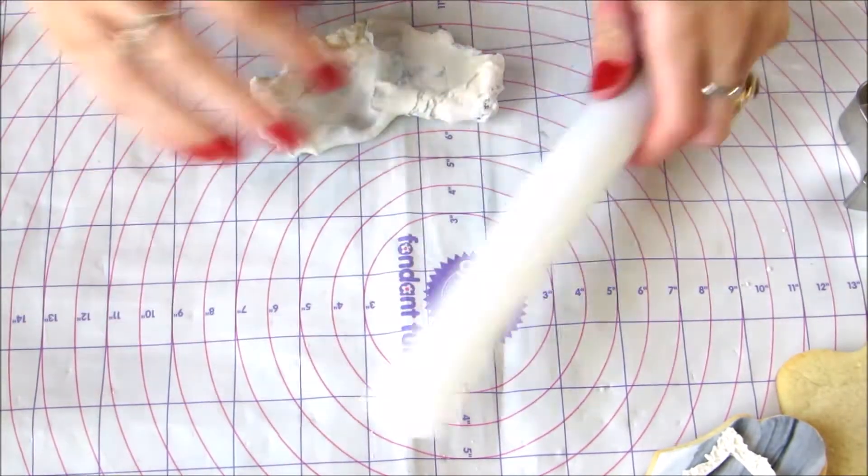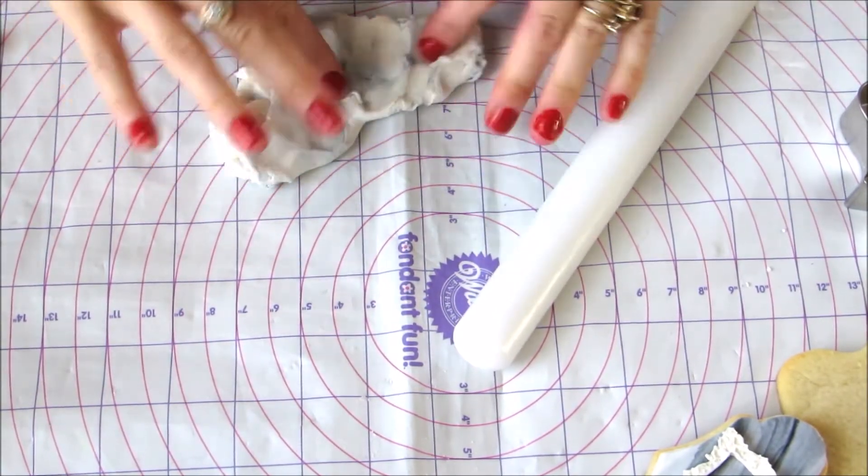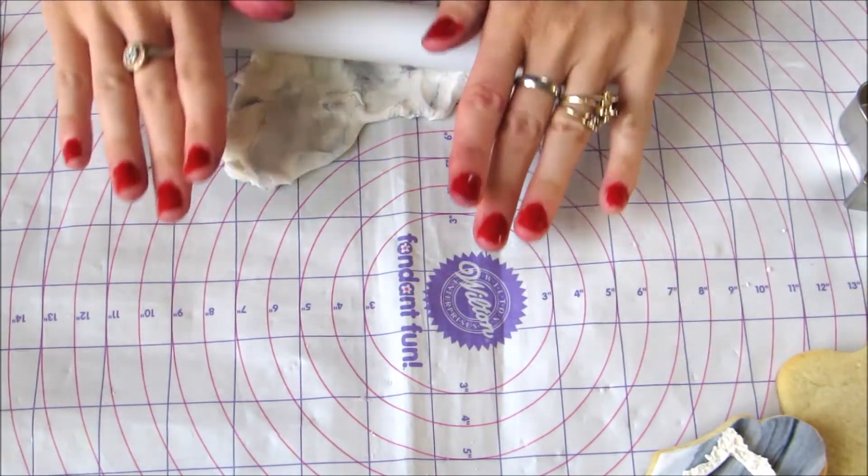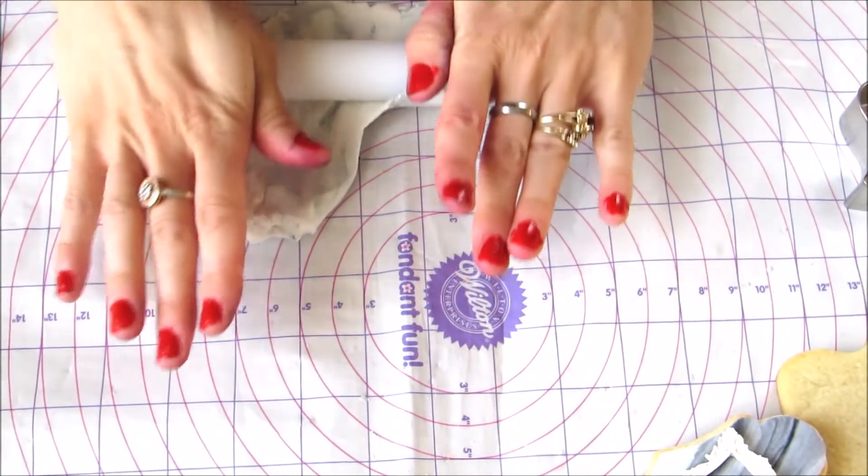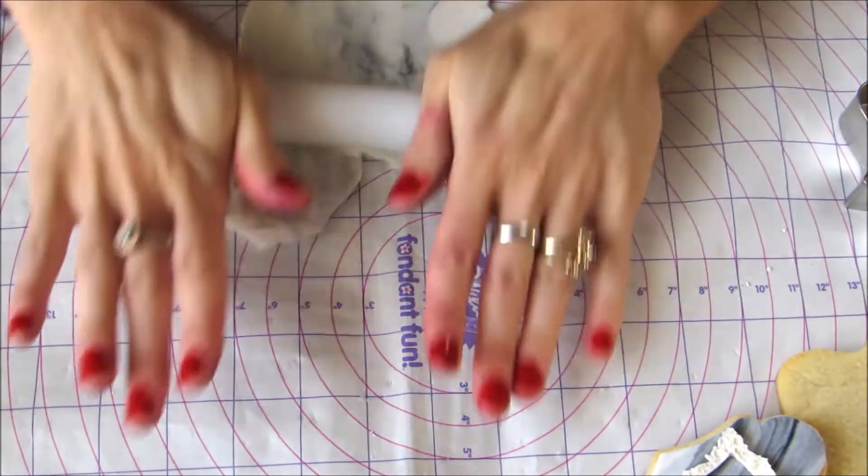You don't want to twist and knead it too much because then it's just going to look like you're combining the colors to make a solid black. Once you've done it just a little bit, you can start to roll it out and get a marble look.